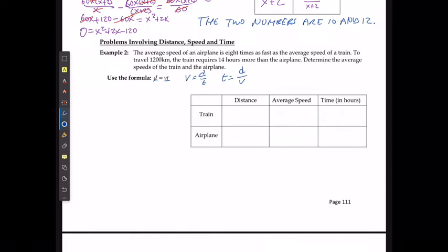In this case, the average speed of an airplane is eight times as fast as the average speed of a train. To travel 1200 kilometers, the train requires 14 hours more than the plane. What is the average speed of the train and the plane? Well, they're both traveling the same distance, 1200 kilometers. Their average speed, I don't know. That's what I'm going to be solving for. But I do know that the airplane is eight times as fast as the train is. So I'm going to say that the train will have a speed of x and the airplane is going to be eight times what that is.